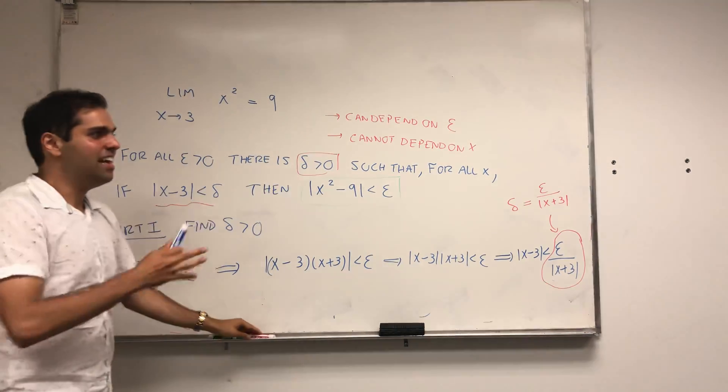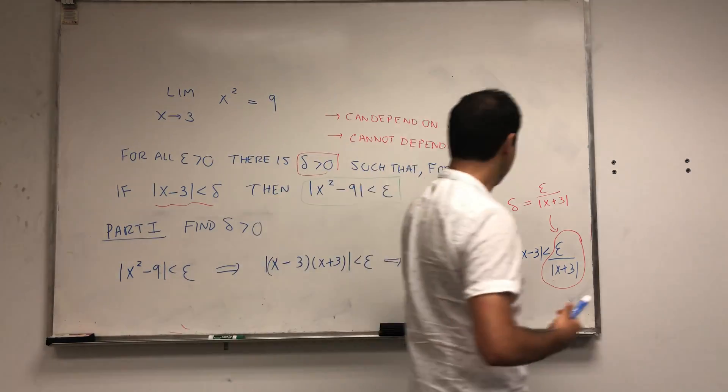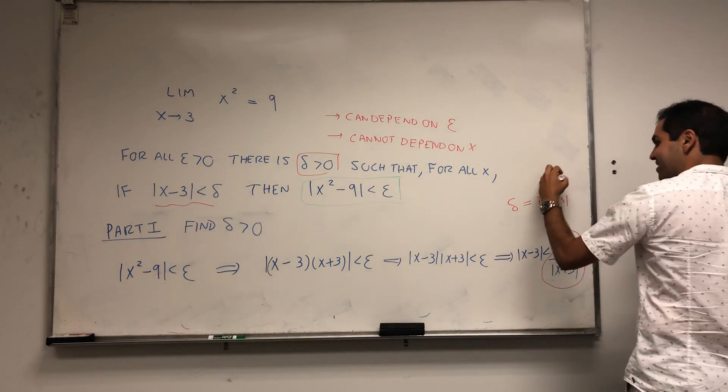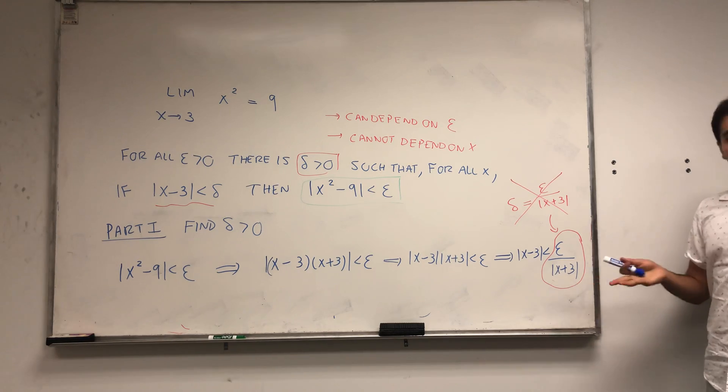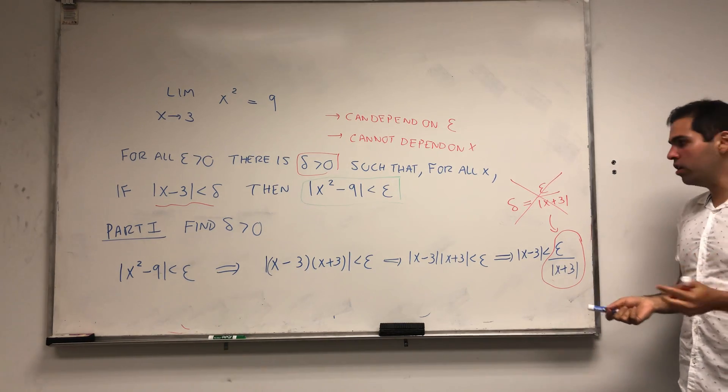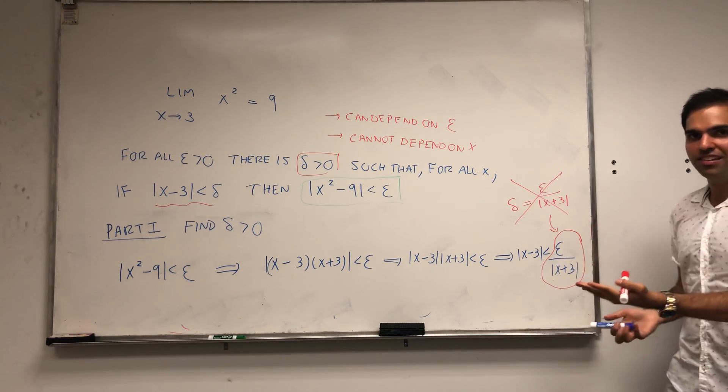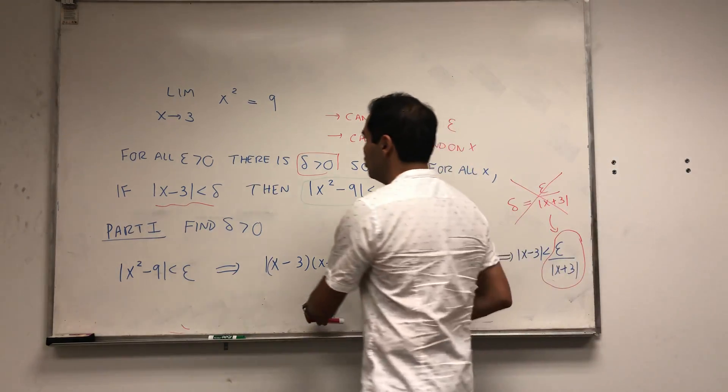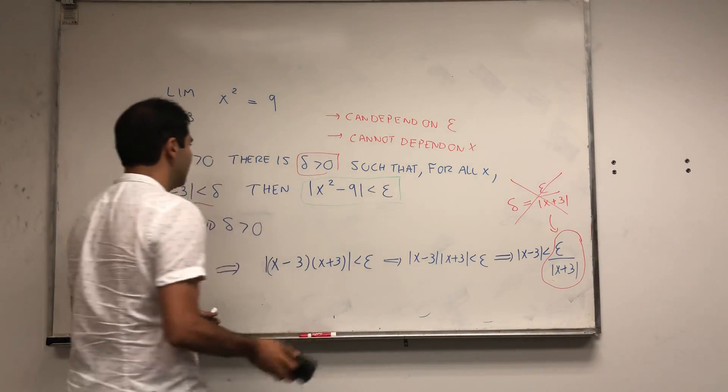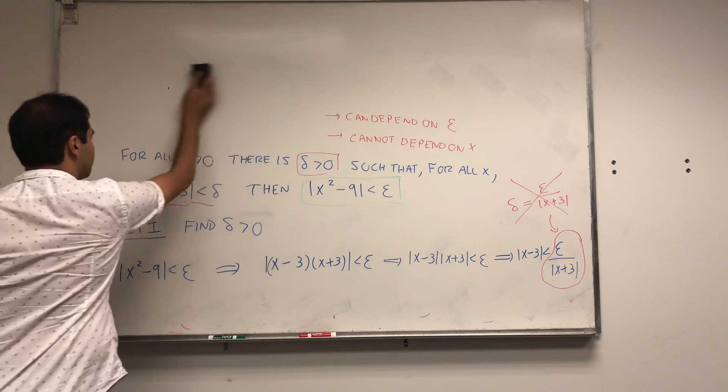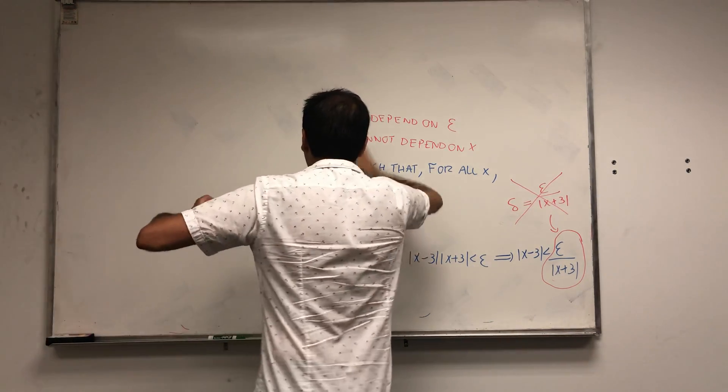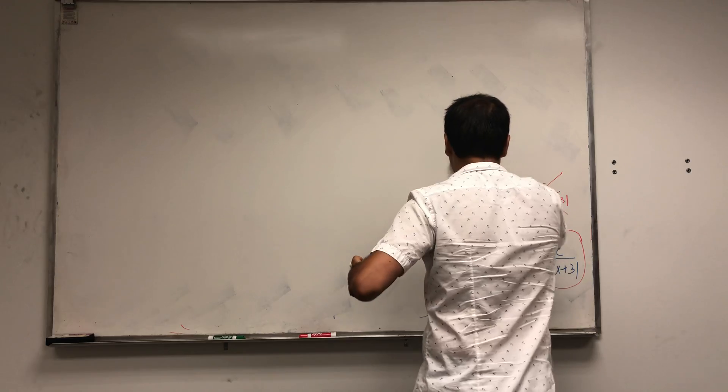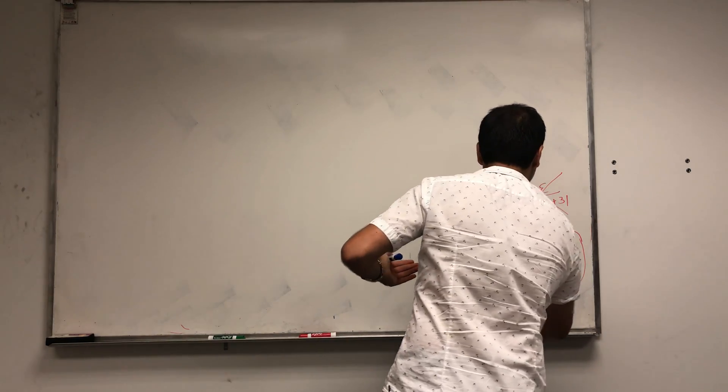Our first guess isn't quite right because this guess depends on x. Let's try to do a little bit more work to make this not depend on x. Let's try to find a universal constant. For this we want to use the fact that x is actually not very far away from 3.